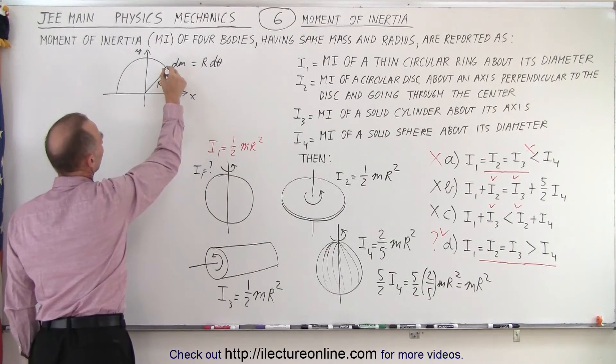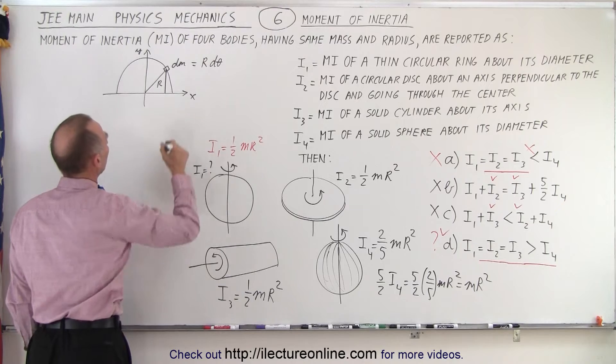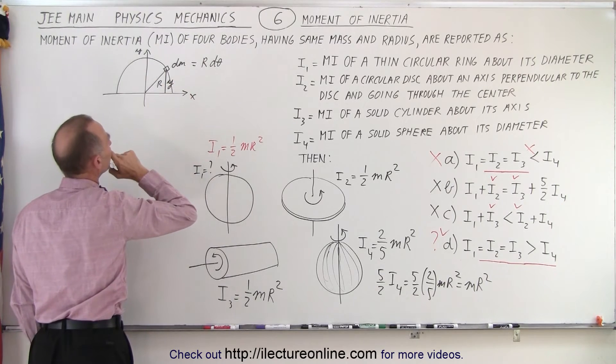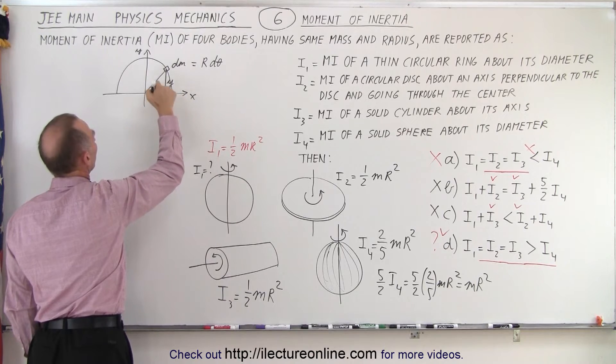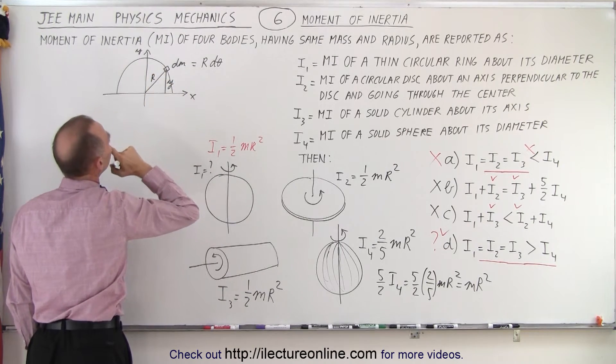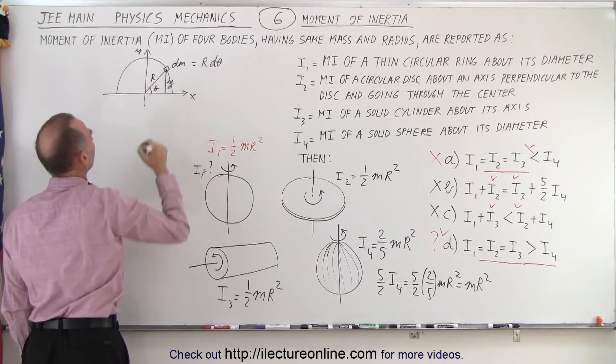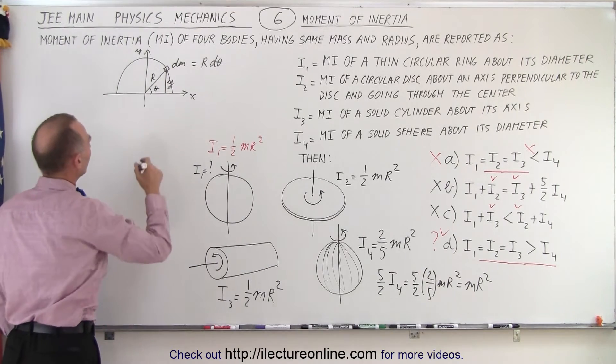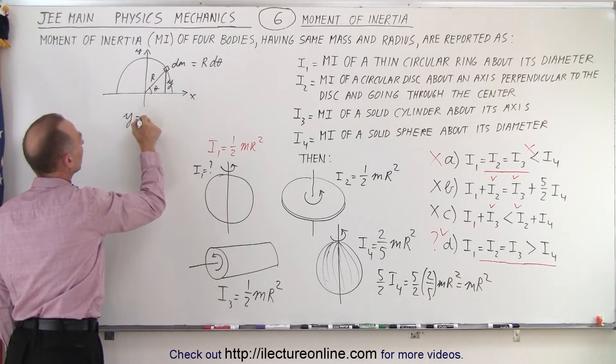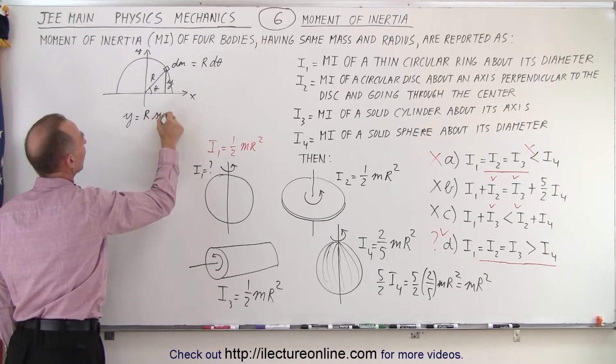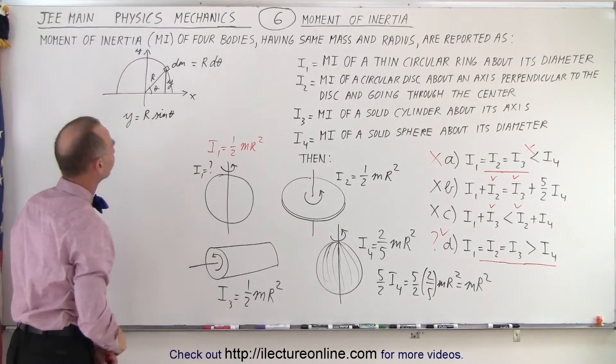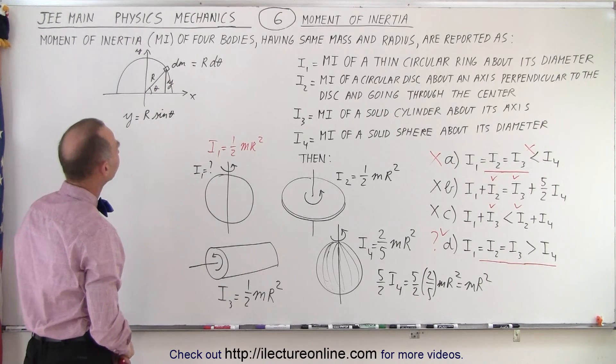And then if we draw a line straight back down, and we call this y. And this is r. Let me put the r on the other side right there. And let's call this angle here theta. Then I can say that y is equal to the radius r times the sine of theta.